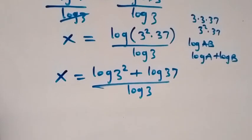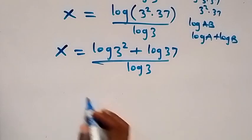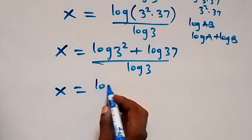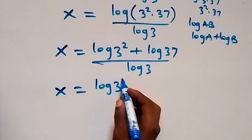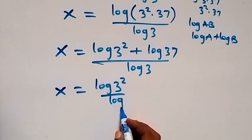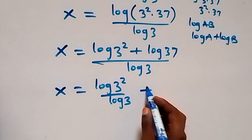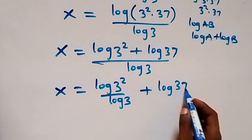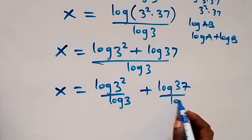Then also when we separate this into two fractions, we have x now equals to log 3 squared over log 3, then plus log 37 over log 3 from here.